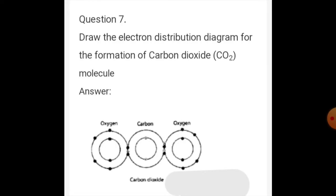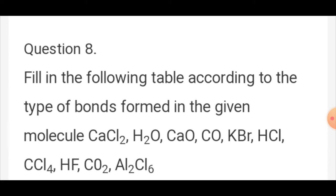Question number 7: draw the electronic distribution diagram for the formation of carbon dioxide molecule. Oxygen has atomic number 8 with 6 valence electrons. Carbon has atomic number 6 with 4 valence electrons. Draw the electronic configuration distribution diagram for carbon dioxide.